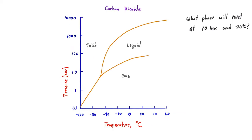So how do we use a phase diagram? One question we could ask is what phase will exist at certain values of pressure and temperature. In this example with carbon dioxide, what phase will exist at 10 bar and minus 20 degrees Celsius? To find that, we draw a line from 10 bar over to minus 20 degrees Celsius, and you can see that point is clearly in the gas region. So at 10 bar and minus 20 degrees Celsius, carbon dioxide will be a gas.